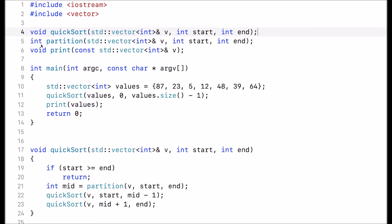The partition function returns an integer which represents the index where to split the vector during the division phase. I also have a print function which prints out the elements of a given vector. Let's take a look at the quicksort function.